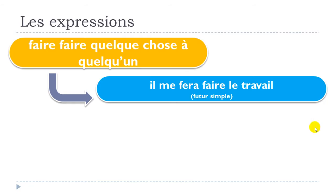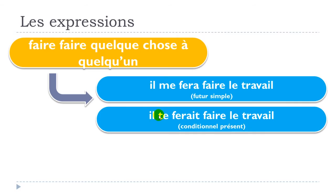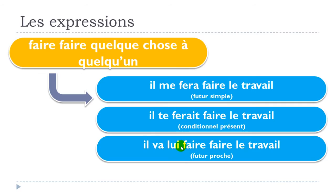Now let's see how to use this expression at different tenses with pronouns. For the future simple with the first person singular, you get: il me fera faire le travail — only the first faire is conjugated, the second stays at the infinitive. For the conditionnel présent with the second person tu: il te ferait faire le travail.